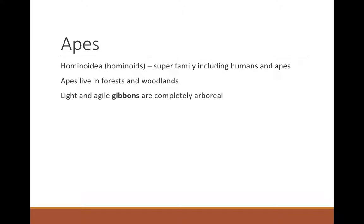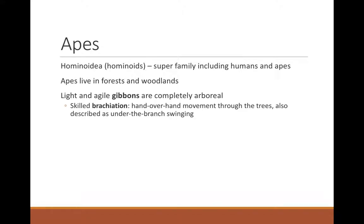The light and agile gibbons are completely arboreal and have a suite of adaptations tied to that arboreal lifestyle. They move through brachiation — hand over hand movement through the trees, also called under-branch swinging. Because of this, they have a wingspan of six feet from tip of the third finger to tip of the third finger. Their arms are as long as Michael Phelps's, but they're only three feet tall. Having arms that long really constrains you to being up in the trees.